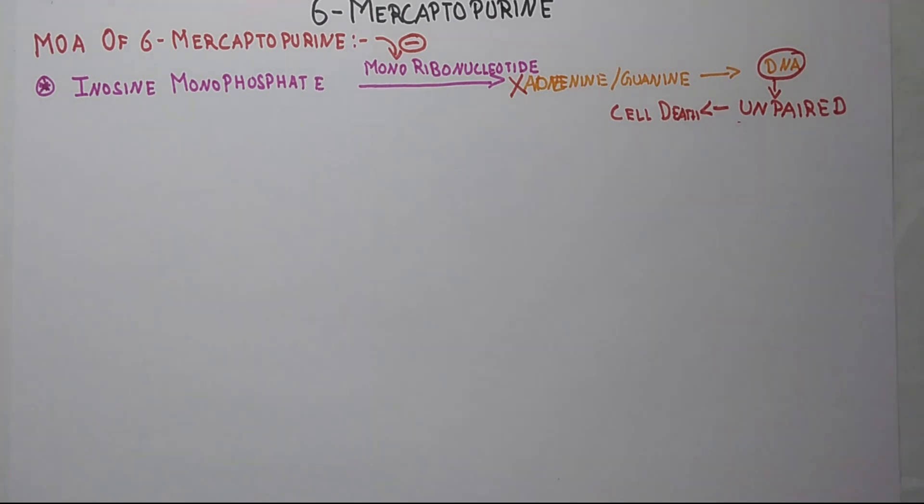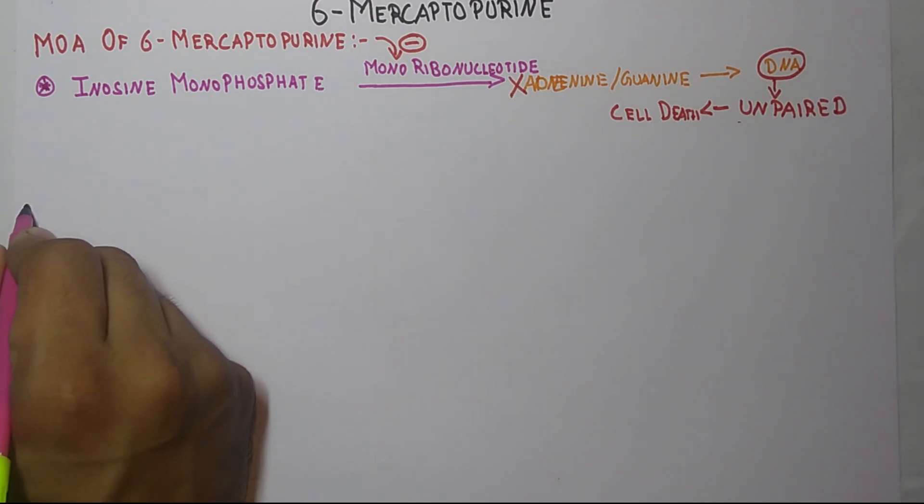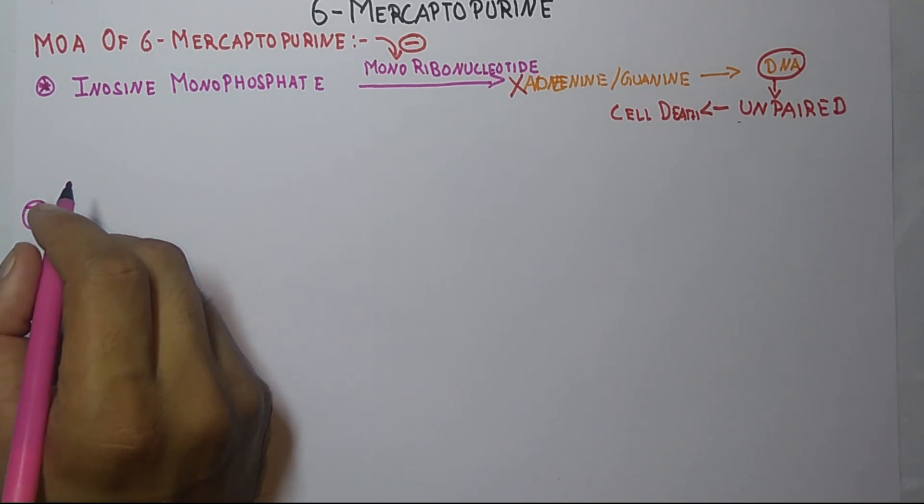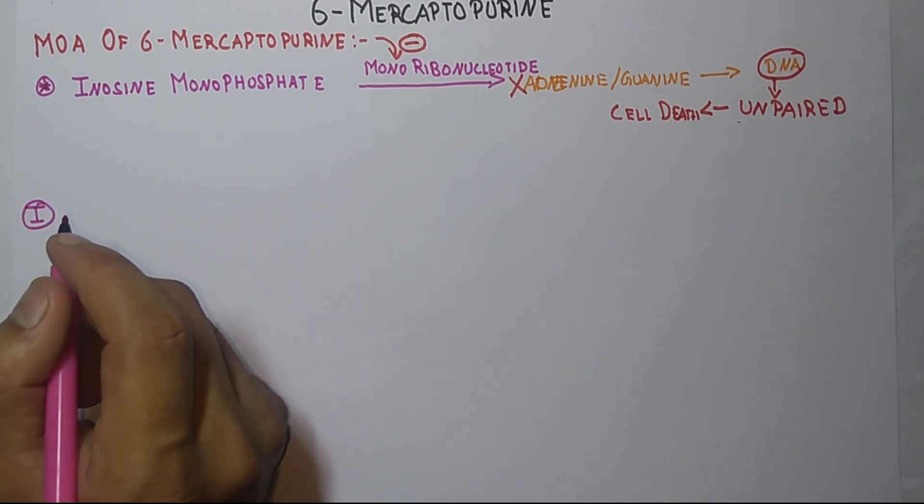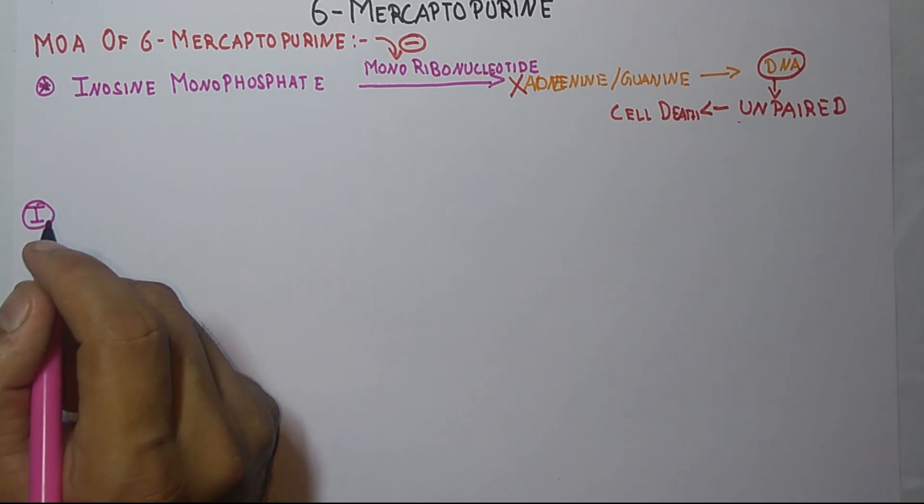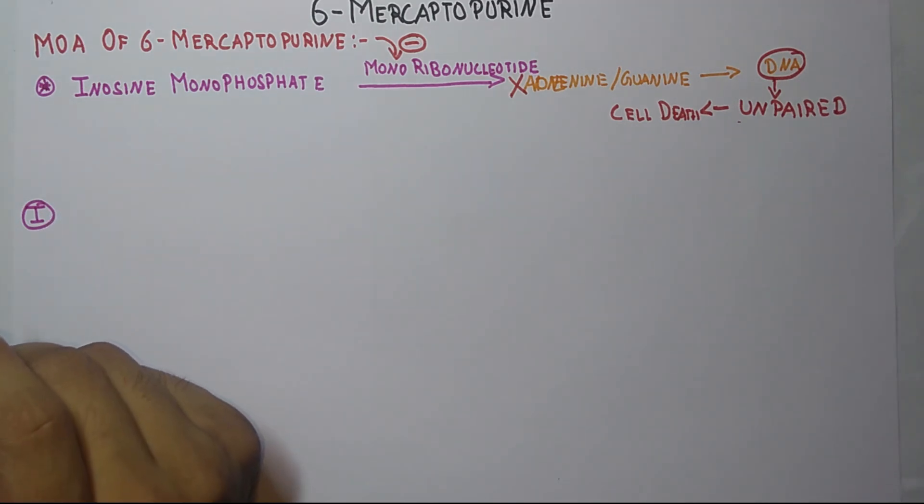Actually students, there are two pathways for the synthesis of mercaptopurine. First one is that it is synthesized from 6-chloropyrimidine 4,5-diamine.